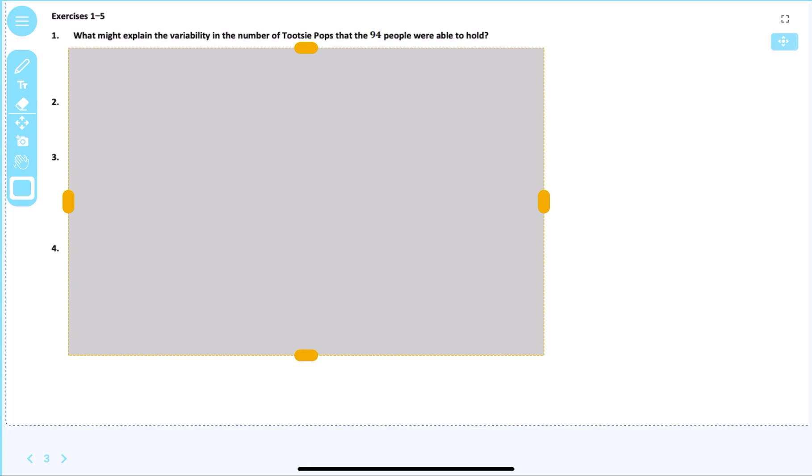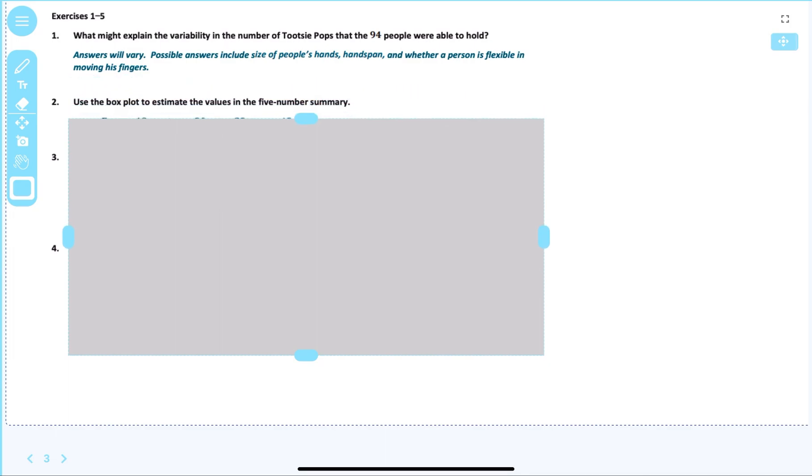Exercise 1 through 5. What might explain the variability in the number of Tootsie Pops 94 people were able to hold? If you're asking 94 people, just think if we asked every student at our school, which is about a hundred students to grab a hold of Tootsie Pops, how many is everybody going to be able to grab? If you think about a senior and their hand size and a kindergartner and their hand size, that's going to be different. So that's one thing that might change is maybe their ages. The hand span, able to flexible to move their fingers, that's another one.